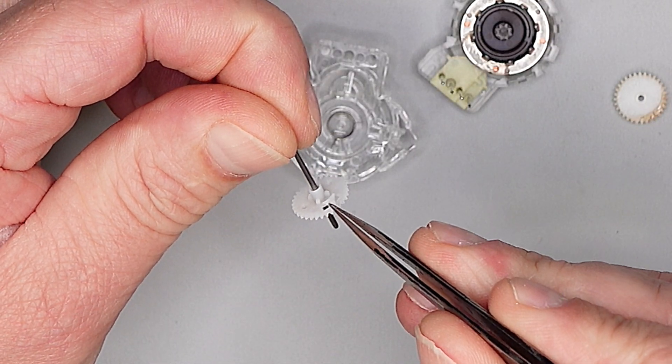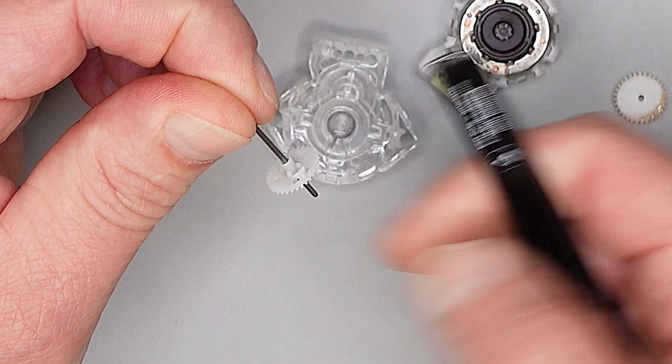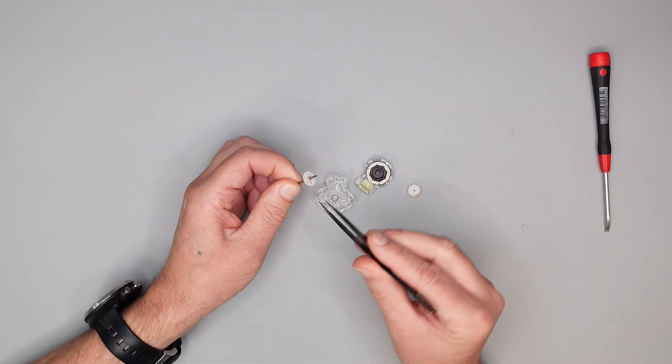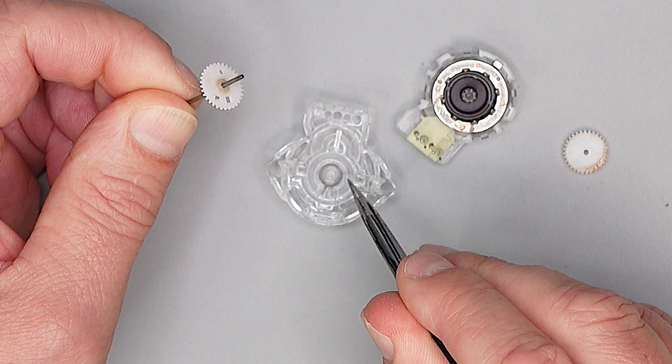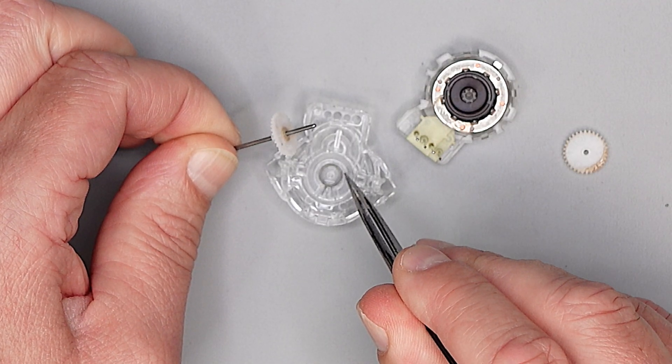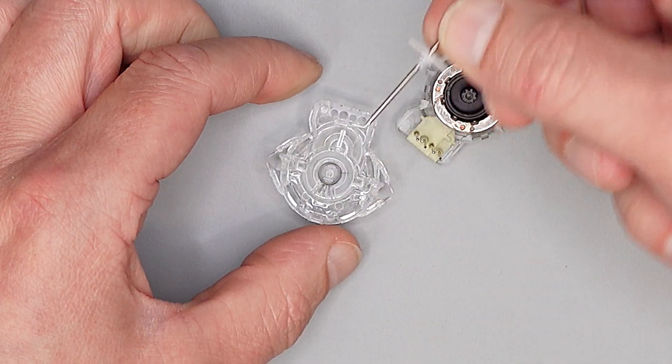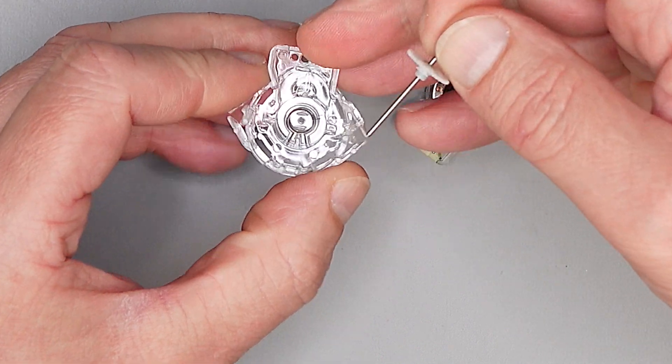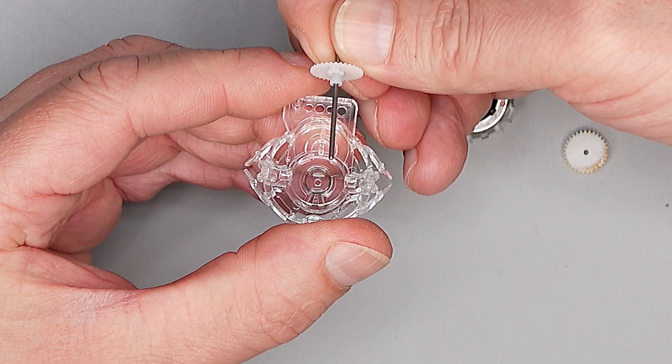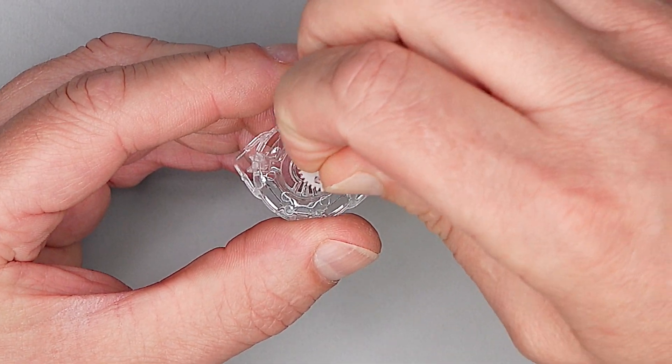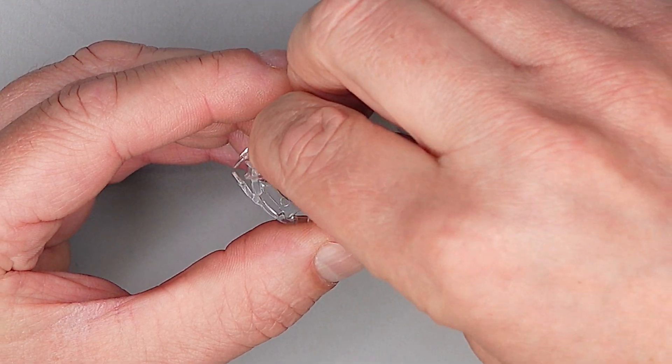Hier ist unser anderes Zahnrad, und hier haben wir eine kleine Nase drauf. Die sitzt hier, und diese Feder fasst nachher in diesen Mitnehmer rein. Also setzen wir das vorsichtig auf, dass die Nase nach hier zeigt und noch nicht vom Mitnehmer ist.